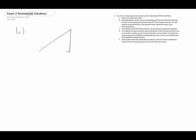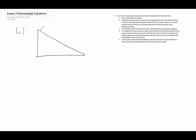In the first part of the problem, we have a car on a slope on wet concrete. The static coefficient of friction of wet concrete is 0.7, and the kinetic coefficient of friction is 0.5. The car is barely being held there by friction, and we're asking what is the angle of this slope.